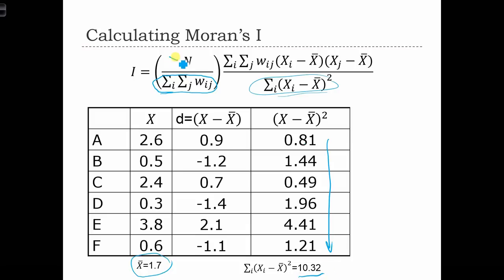This n over here is just the number of observations we had. We had 1, 2, 3, 4, 5, 6. So this was 6. The sum of sum of W was 18, and here we had 10.32. And now we need to calculate all of the cross product terms and multiply them by the weights.